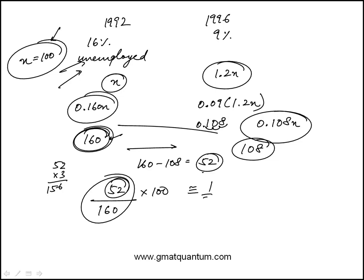52 is a third of 160, because 52 times 3 is close enough to 160. So this is about a third, which is approximately 33%. But if you look at the answer choices, the closest is 30%. So this is about a 30% decrease.